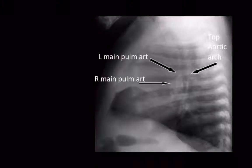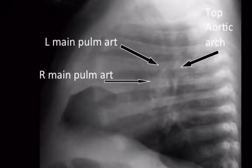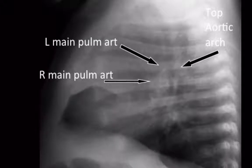Here's a bit of an anatomy lesson to help you out. The structures you see here are the right main pulmonary artery, the left main pulmonary artery, and the aortic arch. I'm not really asking you to be able to identify them individually. What I want you to understand is that they make a horseshoe — an upside-down horseshoe — below which are a bunch of diverging vessels.